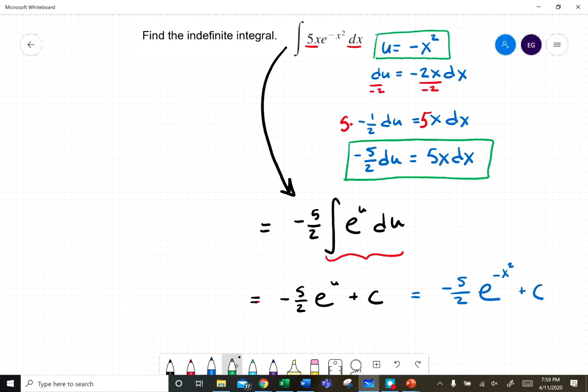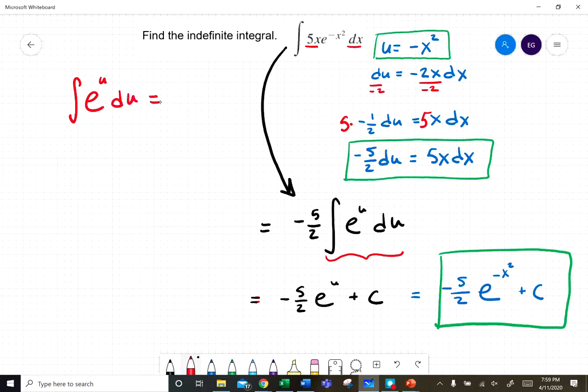And we are done with this one. We applied the rule for the antiderivative: the antiderivative of e to the u du equals e to the u plus C. That about does it for this problem.